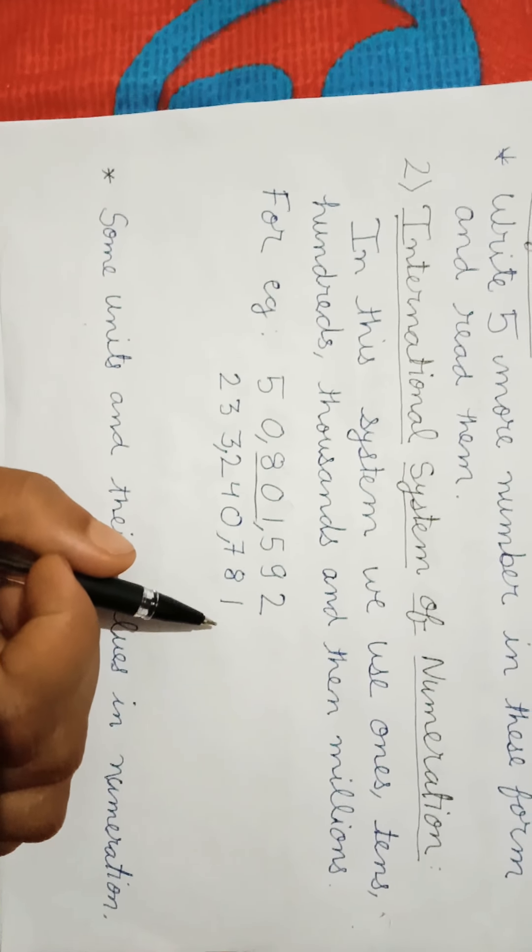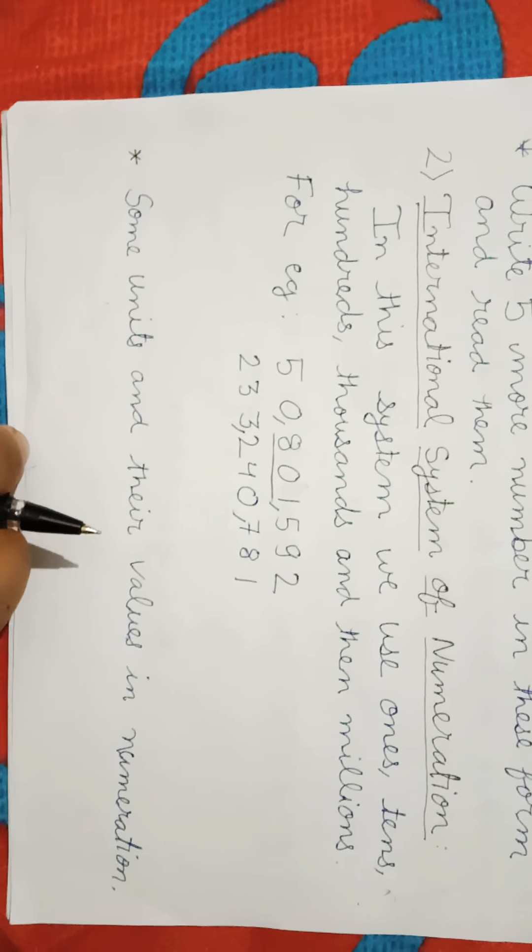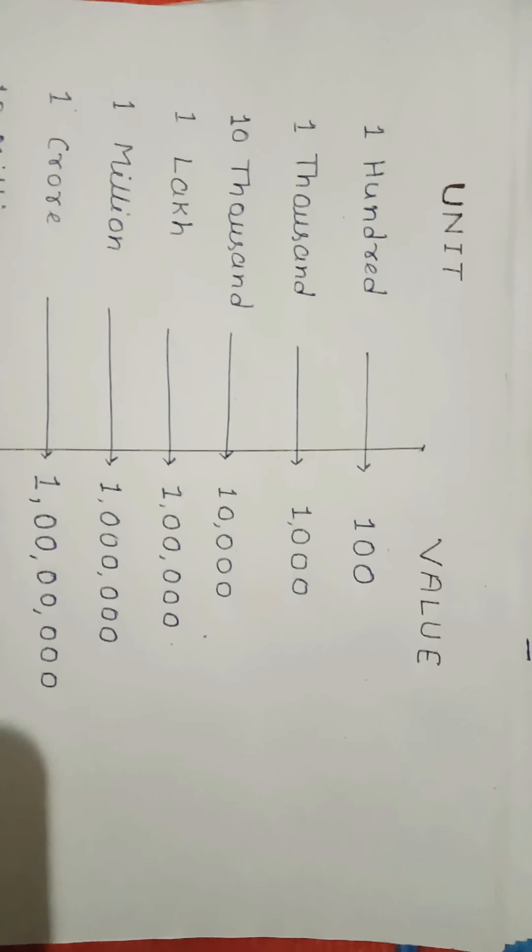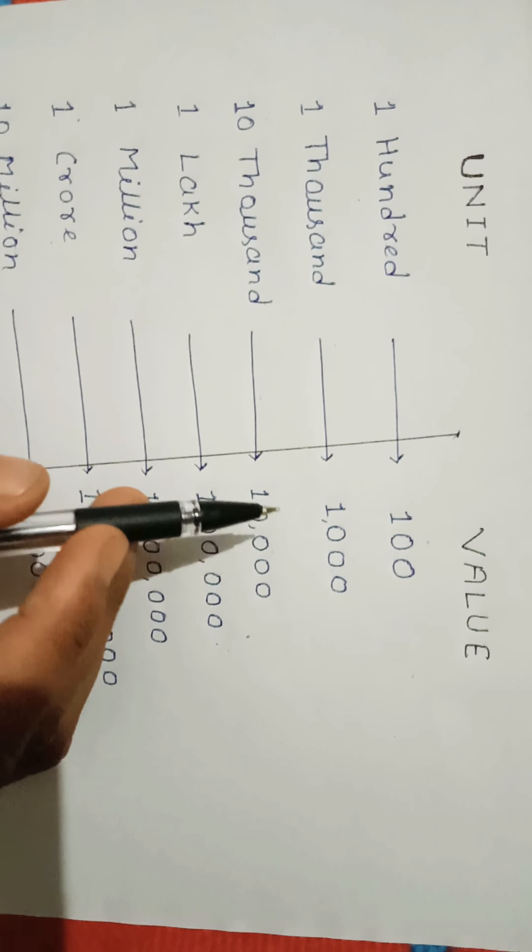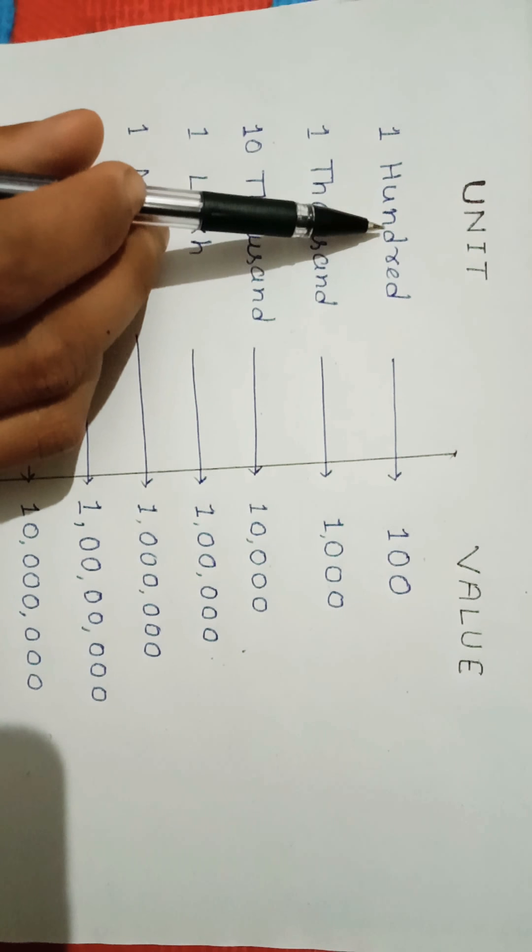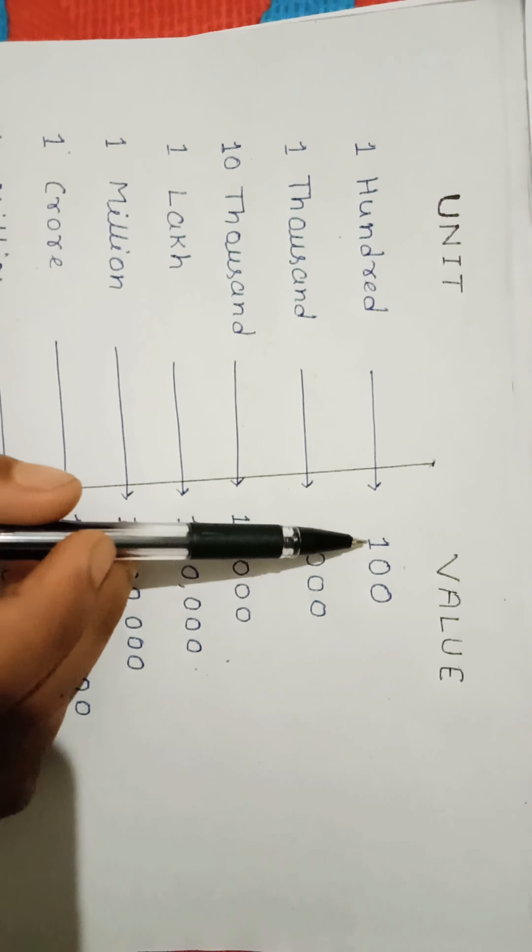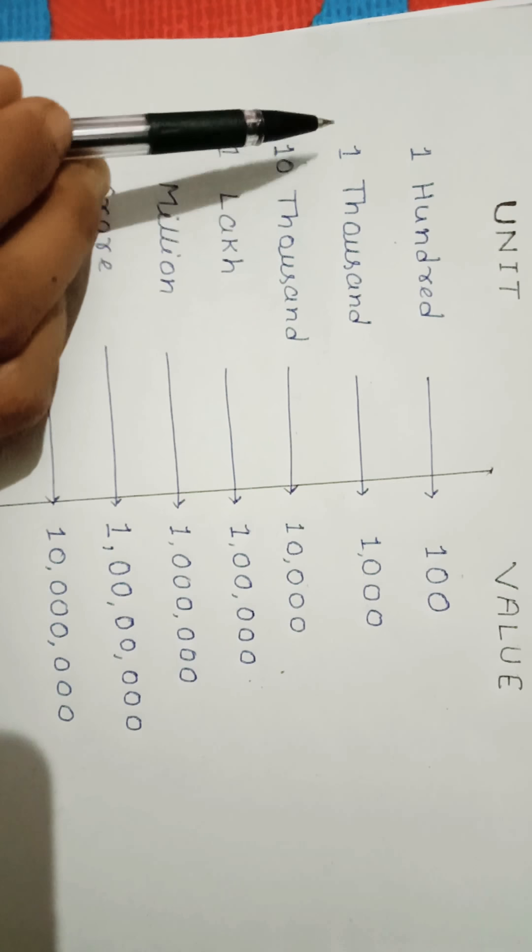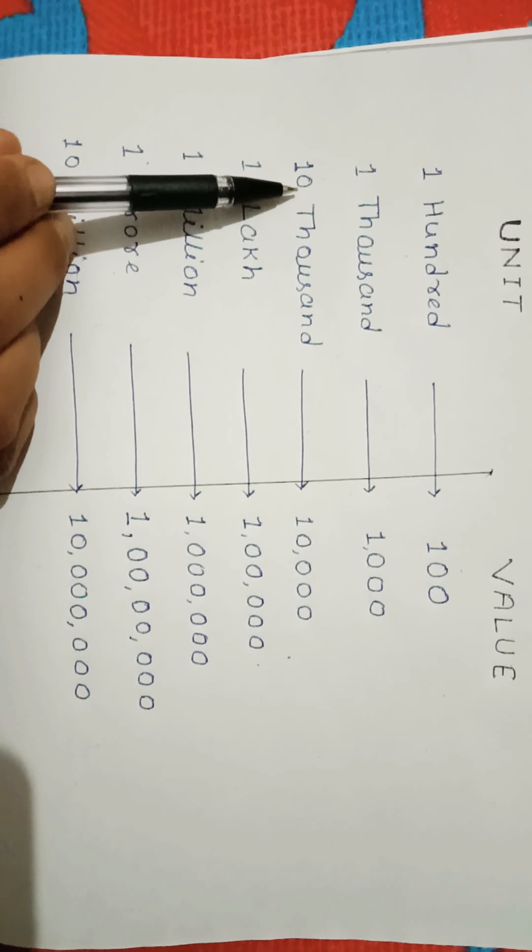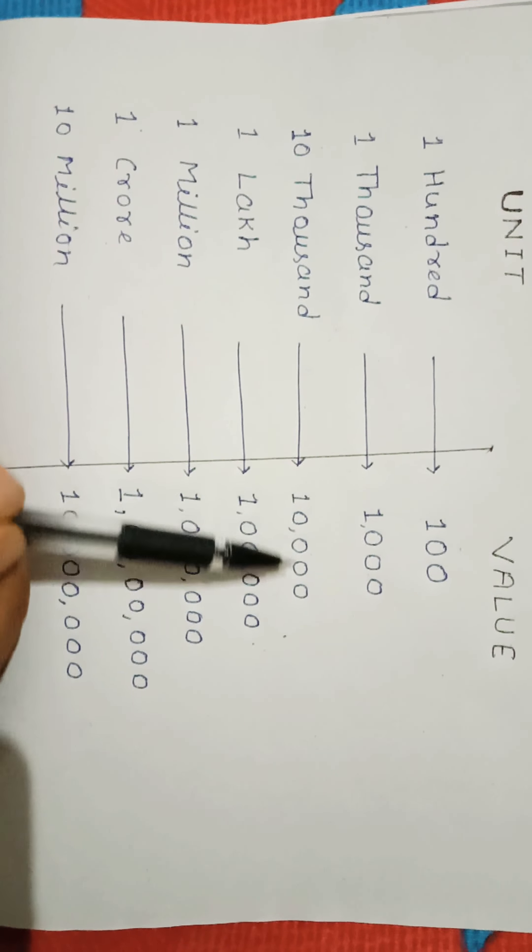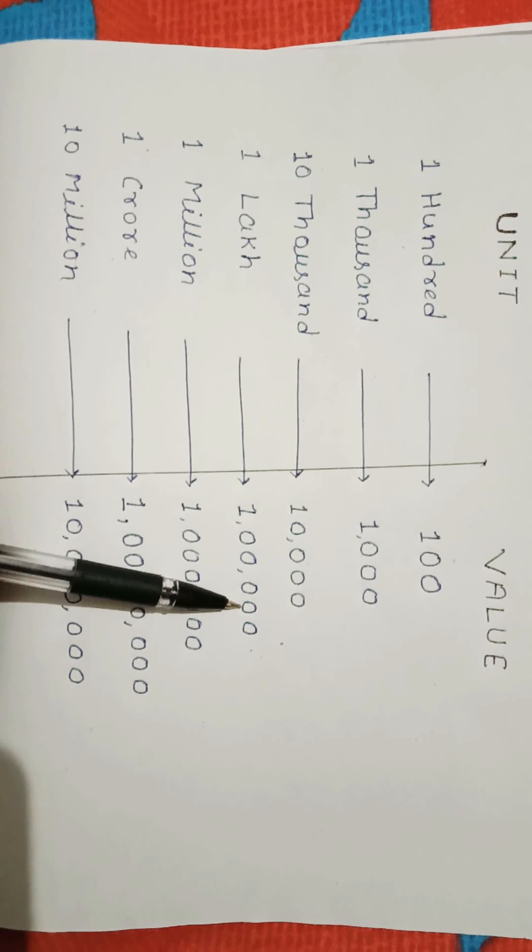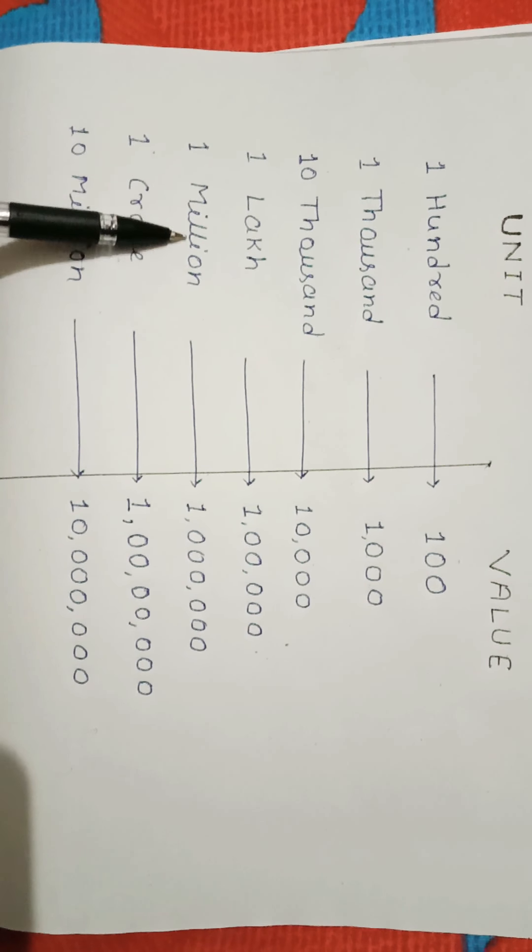Let's discuss some units and their values in numeration. These are units and their values which you already know from your previous classes. First is one hundred, the value of one hundred is 1 having two zeros. One thousand is 1 having three zeros. Ten thousand, the value of ten thousand is 1 having four zeros.